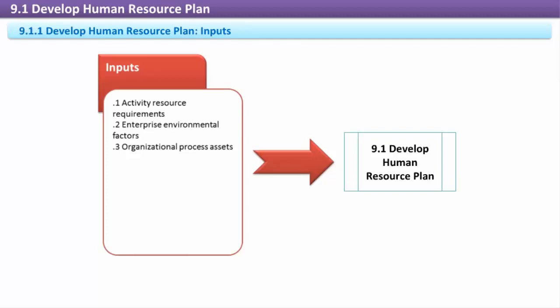Inputs. Activity Resource Requirements: The Activity Resource Requirements document describes the resource needs at the activity level. It focuses on the resource types and quantities needed, and it helps determine the competencies that will be needed for the project. Enterprise Environmental Factors: Any of the many enterprise environmental factors and systems that influence the project should be considered. These factors can include personnel, organizational culture, and marketplace conditions, which influence the types of resources available to fill the roles needed.